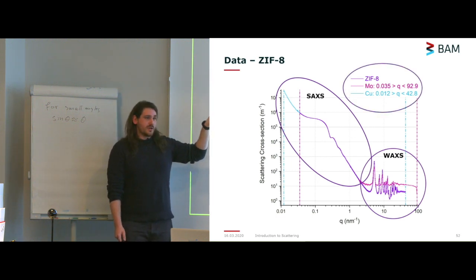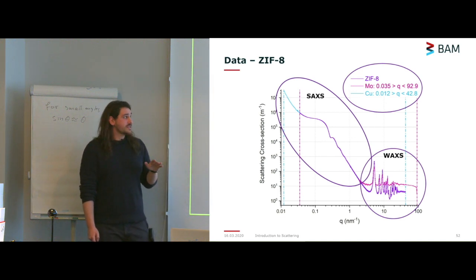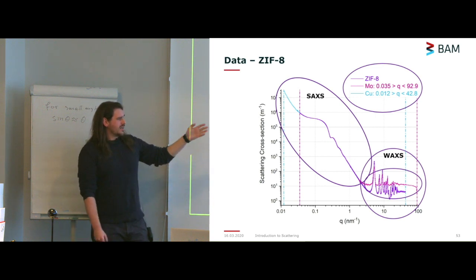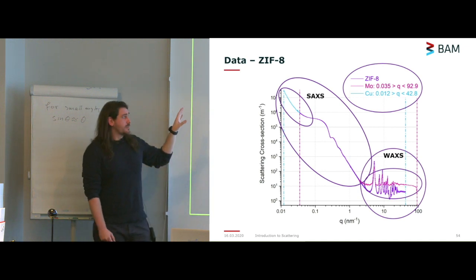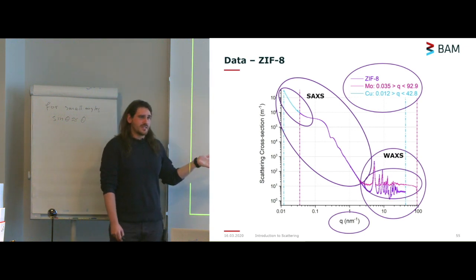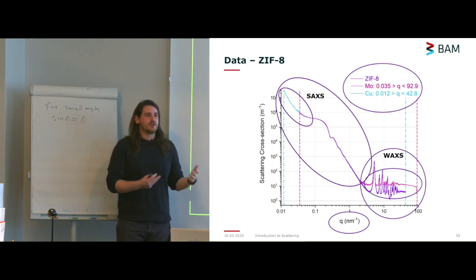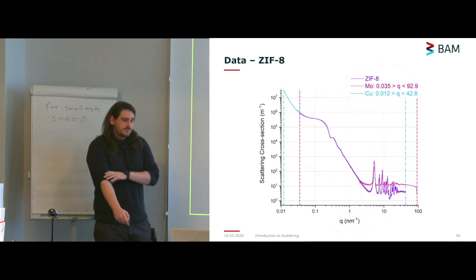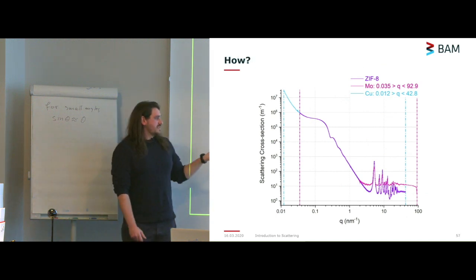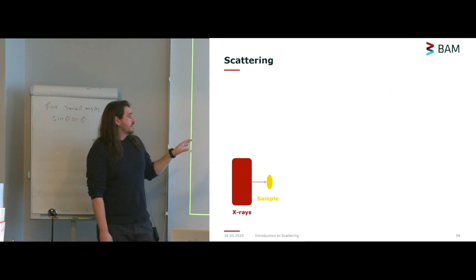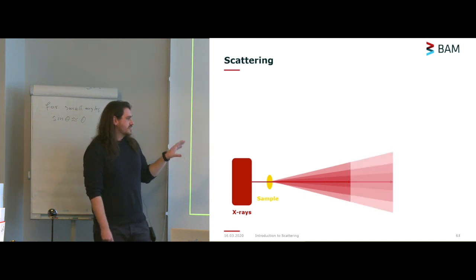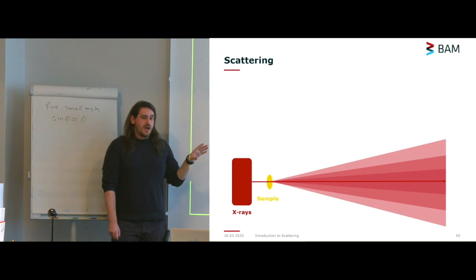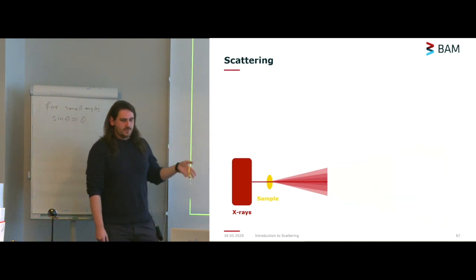We'll also look at what is going on in the low Q region and, more importantly, we'll talk about what Q is, because it might be an odd concept for people used to different techniques. This is a ZIF-8 sample. Let's talk about scattering first — this is how it practically works. You have your X-rays, you hit your sample with them, and then you get scatter. You can put a detector and capture the scatter at different distances from the sample.